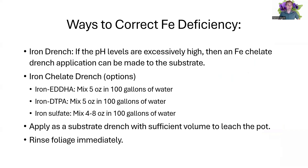Ways to correct iron deficiency — you can use an iron drench if the pH levels are too high. Then an iron chelate drench application can be made. There are a lot of options, but generally five ounces per 100 gallons of water is going to be your going rate. Applying a substrate drench with sufficient volume to leach the pot, making sure it's completely saturated, and then rinsing that foliage immediately to prevent iron from lingering on the foliage and potentially resulting in burn.